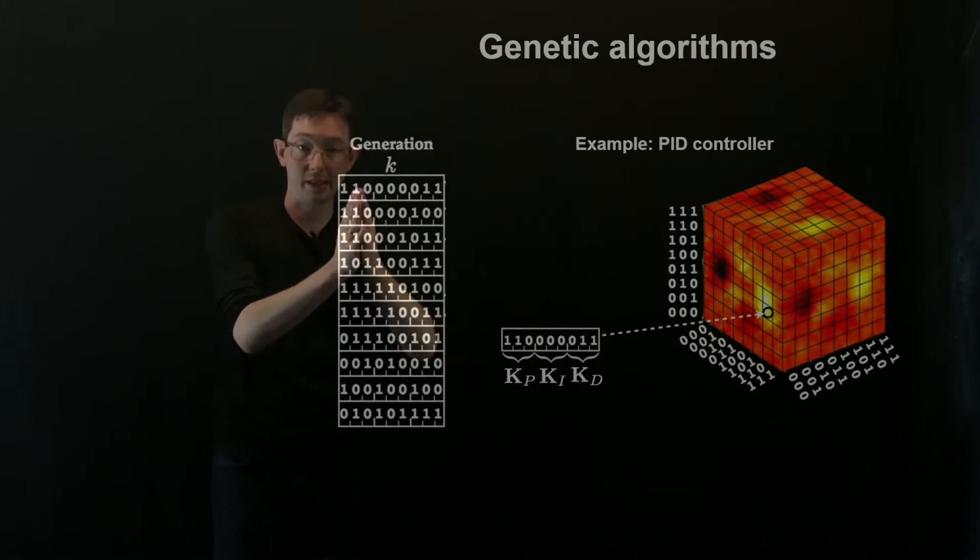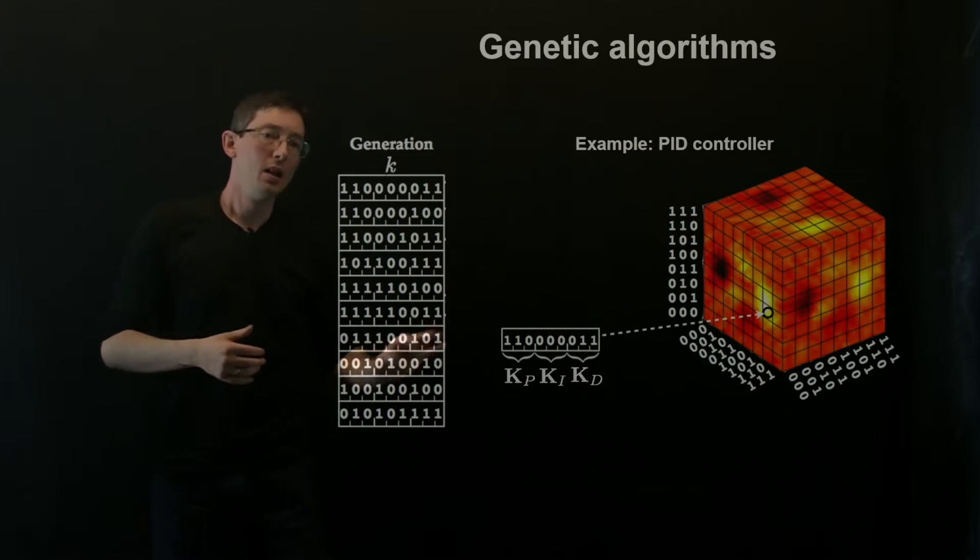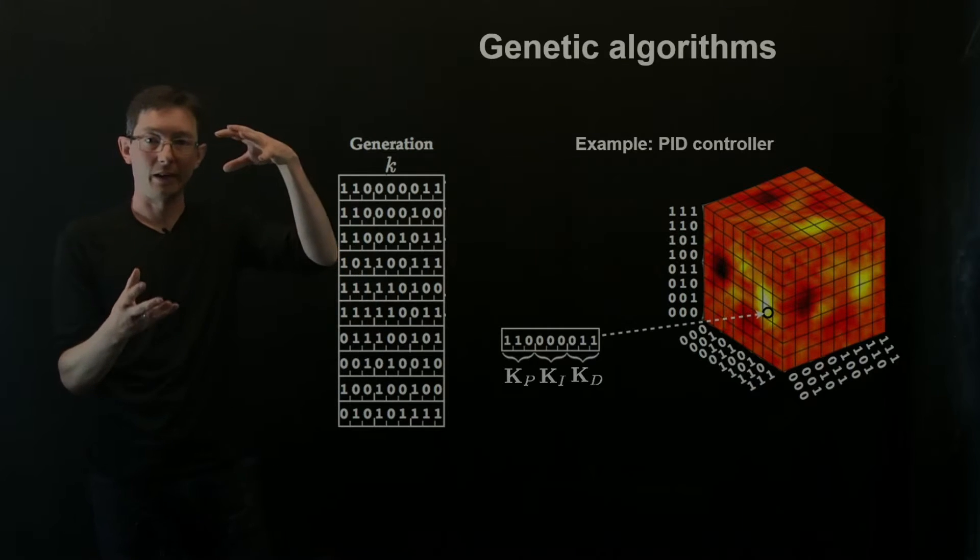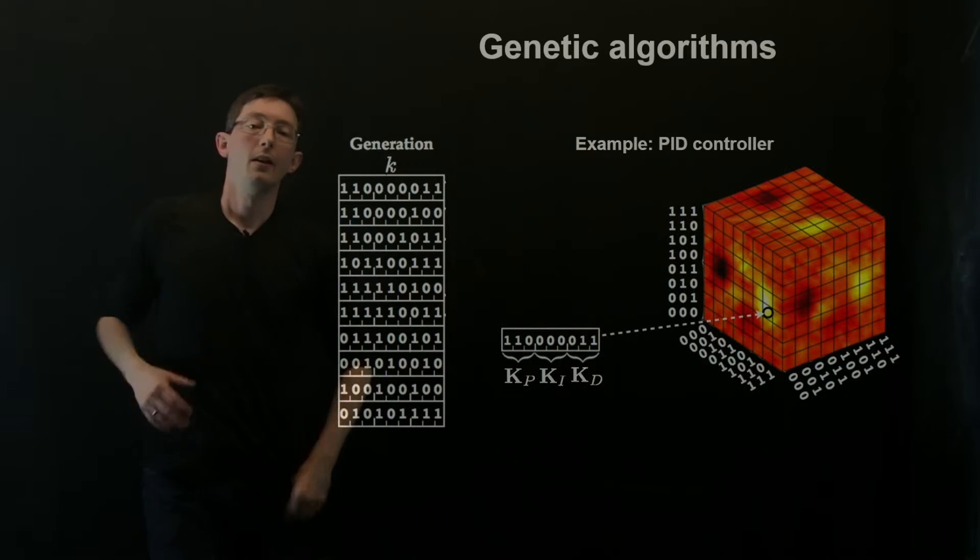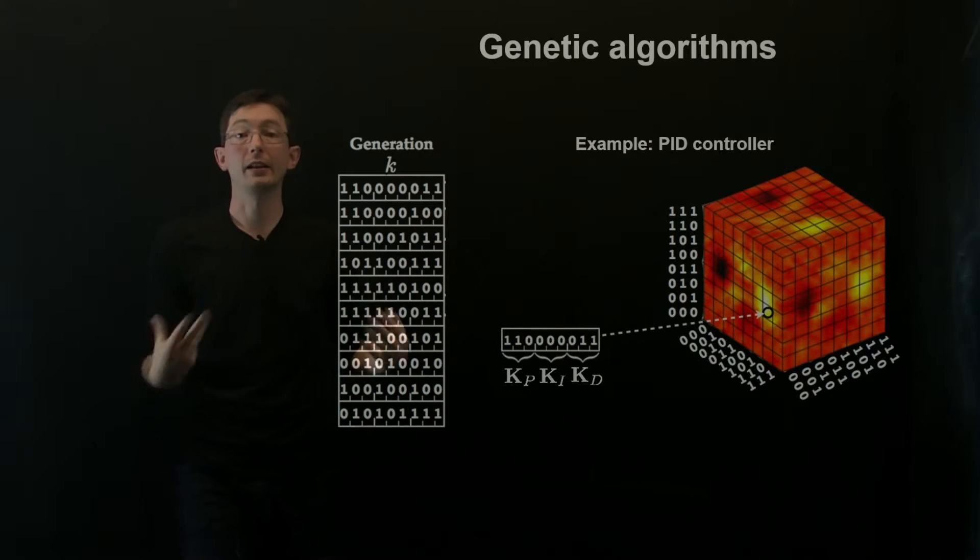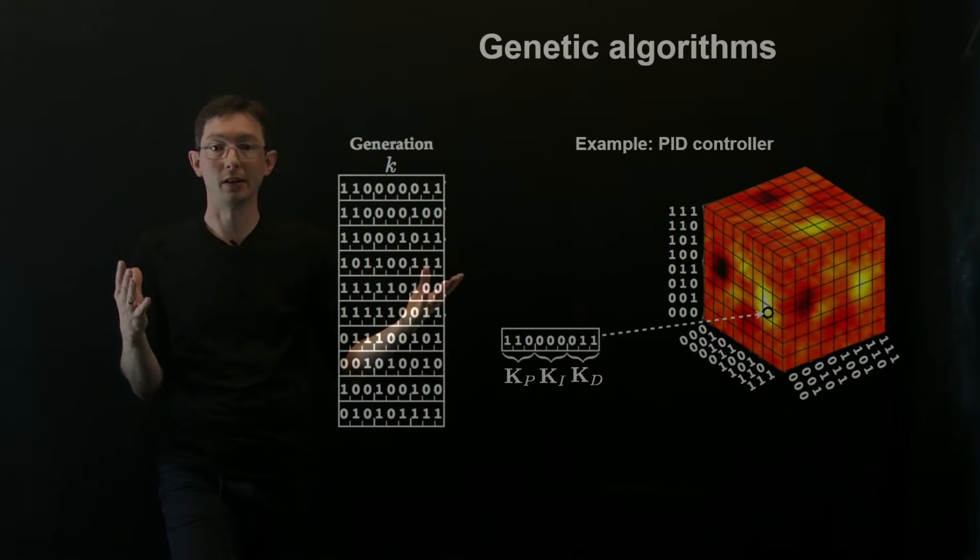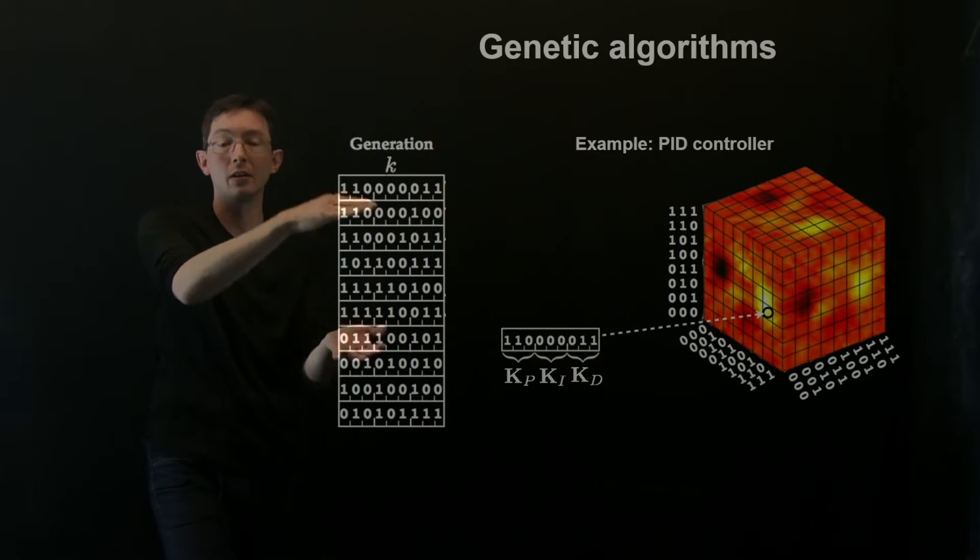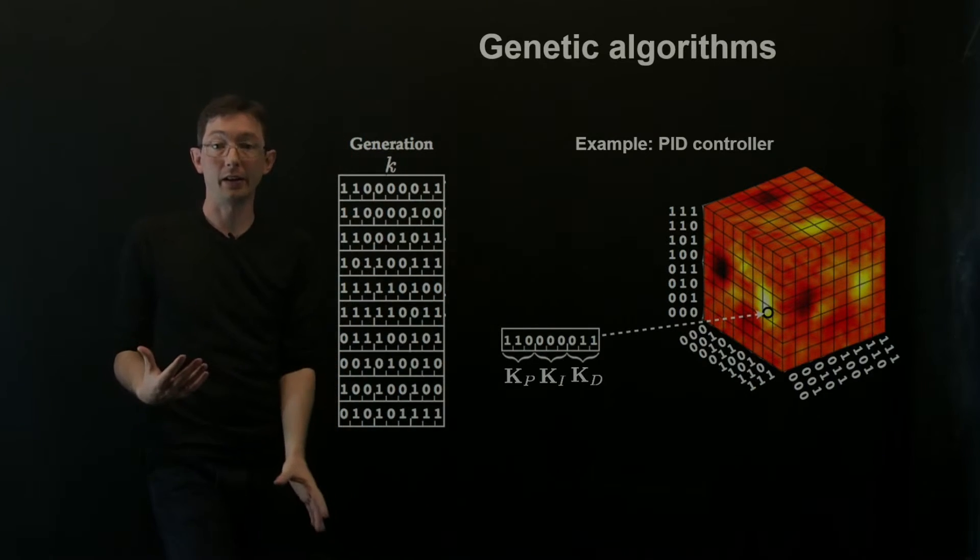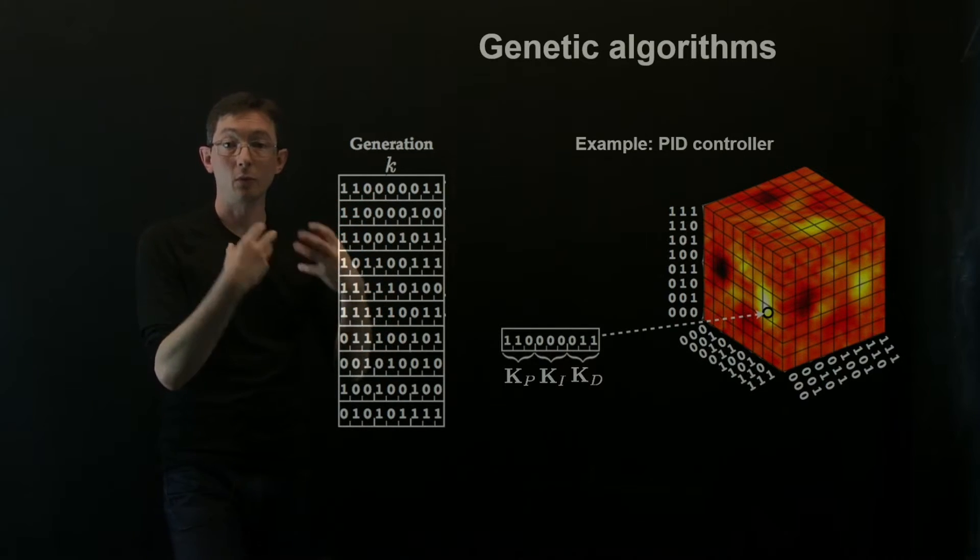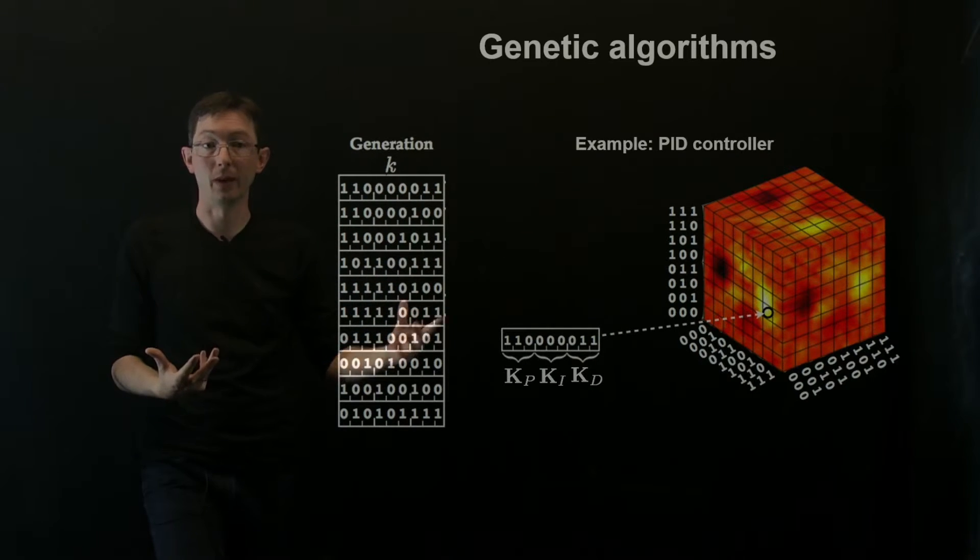So I want to walk you through this genetic algorithm diagram here on this particular example. And then next time we'll code this up in MATLAB and see how it works. So again, in this example PID controller, I had three parameters, which gives me this cube. Every point can be defined as this nine bit number. And what I would do is I would start out with a generation of candidate control laws. And maybe I would initialize this randomly. I just randomly generate, I don't know, 10 candidate control laws. And the size of this population could be bigger or smaller depending on how expensive it is to try these control laws. So in this case, I have 10 candidate control laws I chose randomly.